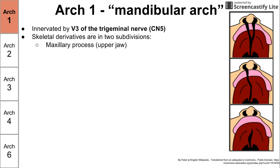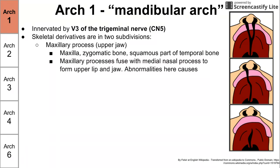Let's start with the maxillary process, or the upper jaw, which eventually develops into the maxilla, the zygomatic bone, and the squamous part of the temporal bone. During development, the two maxillary processes fuse with the medial nasal process that comes in from the top, forming our upper lip and jaw. If there is an abnormality or if this does not fuse normally, you're going to get a cleft lip.